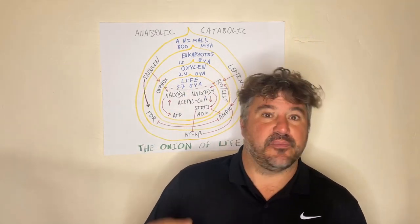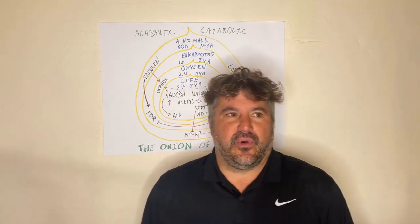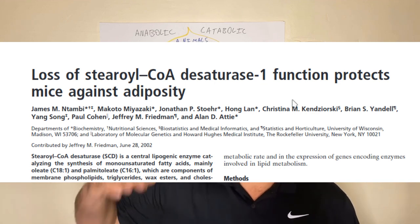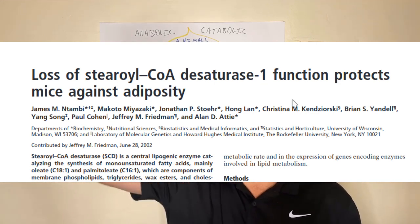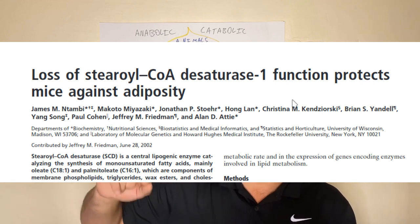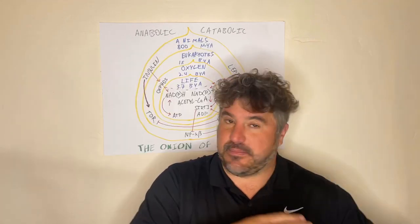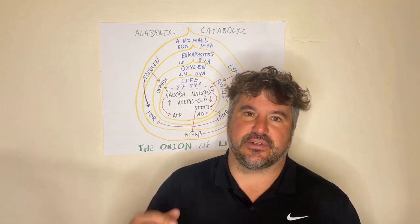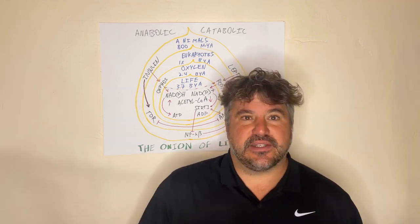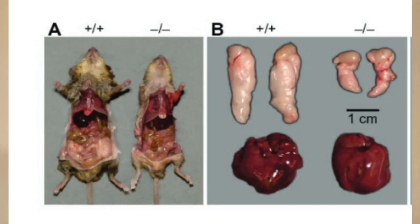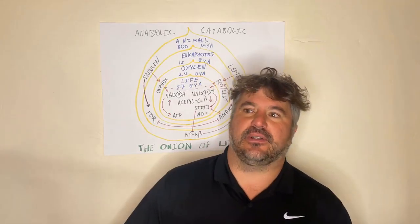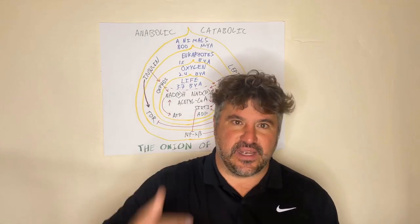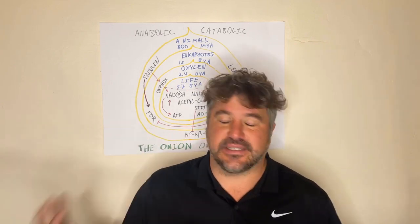SCD1 is fascinating because in 2002 it was reported that mice lacking SCD1 can't make unsaturated fat — all their body fat ends up being saturated, with some unsaturated fat coming from diet. But those mice with only saturated fat are hypermetabolic, with a metabolic rate about 40% higher than normal. They're protected from obesity and protected from diabetes. So having body fat primarily composed of saturated fat prevents diabetes and obesity — at least in mice.